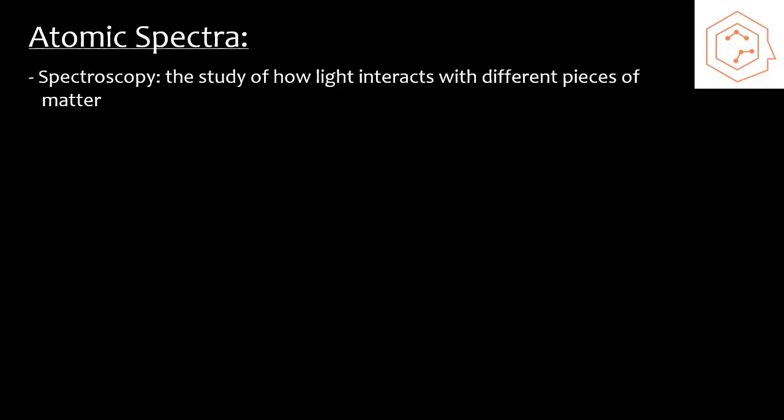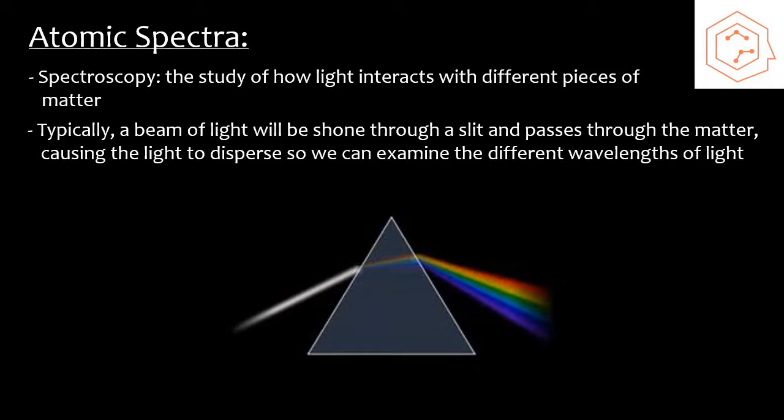Spectroscopy is the study of how light interacts with different pieces of matter. In a very basic sense, we typically will have a beam of light that is shone through a slit and it will hit the sample and interact with it. This often causes the initial light beam to disperse into its different wavelengths of electromagnetic radiation that are hidden within this one beam, which is why we see in this diagram below a white beam goes in and it comes out with many different colors. All these colors of light correspond to a different wavelength.